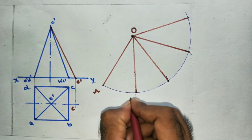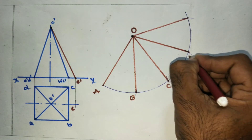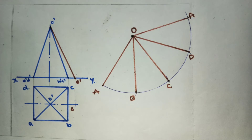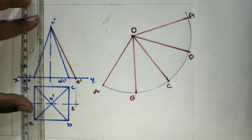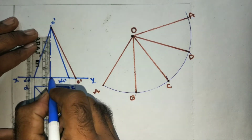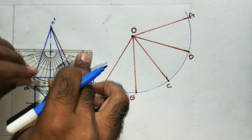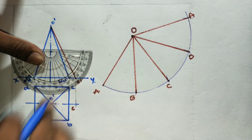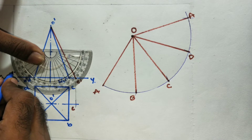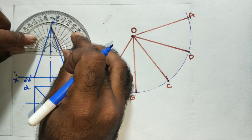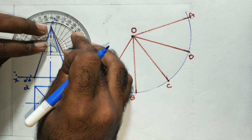Mark points A, B, C, D — this is the square. Now consider the cutting plane at 35 degrees on the axis at 30 mm. Take a point on the axis 30 mm above the base. This angle is 35 degrees. Mark this as 35 degrees.